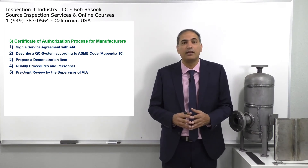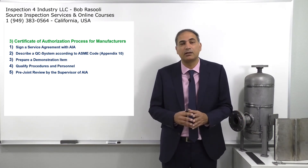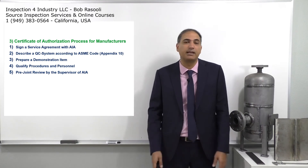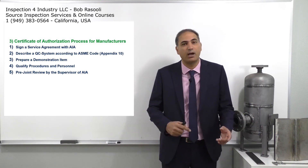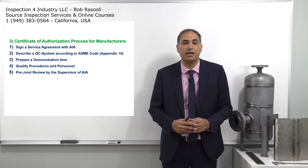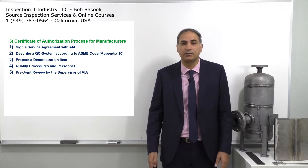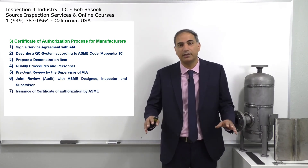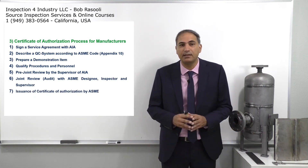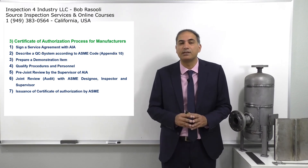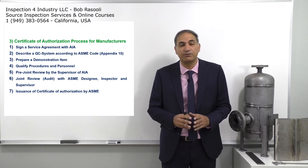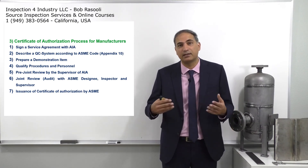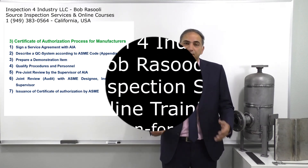If everything is okay, they coordinate and schedule a formal audit by the ASME designee, the supervisor of the Authorized Inspection Agency, and the authorized inspector, as shown on screen. If the audit finds everything is as per Appendix 10, the Certificate of Authorization is issued, which is valid for a certain number of years and must be renewed once that period elapses.